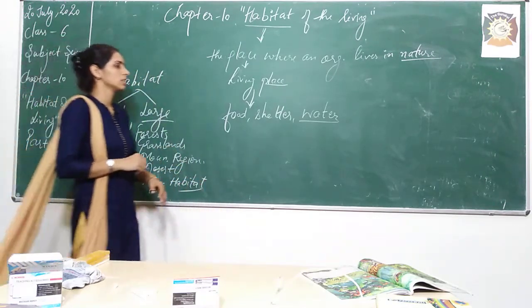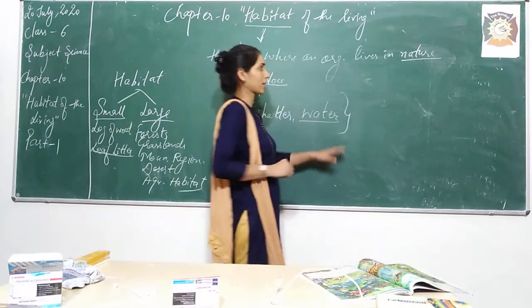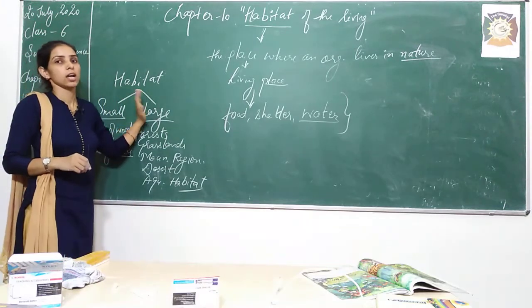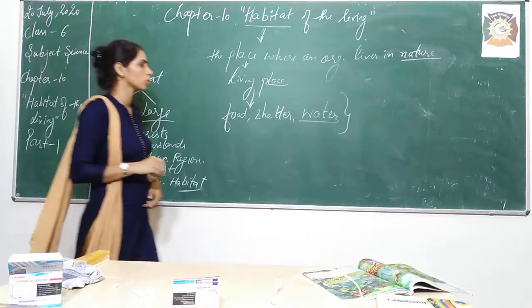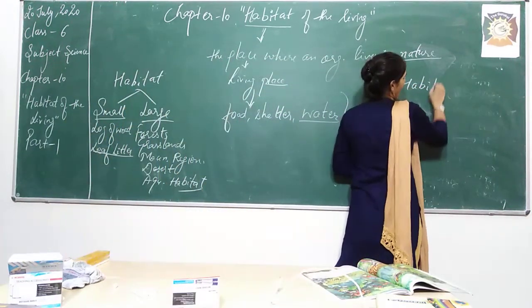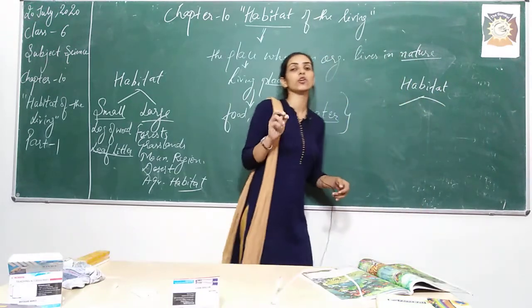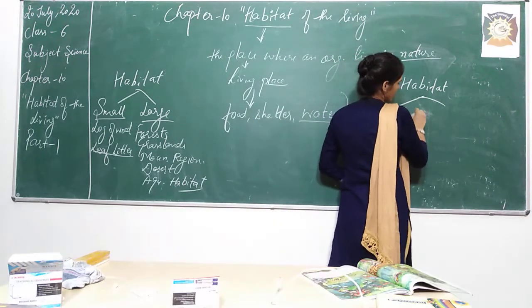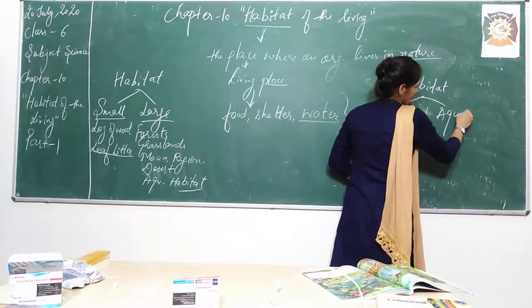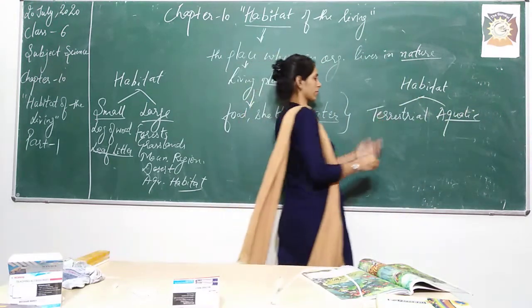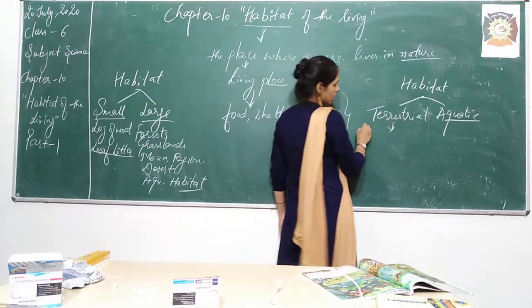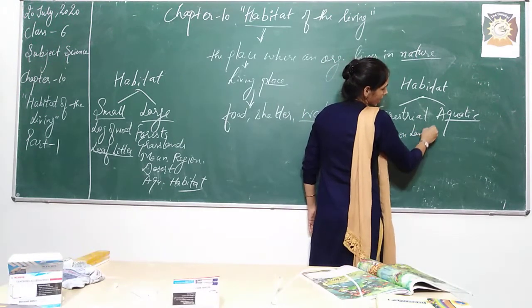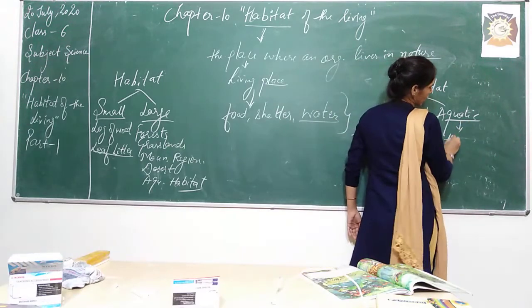So these are the necessities which are provided by the habitat. Now we have discussed about small and large, but the main categories of habitat are of two types. Habitat could be terrestrial as well as aquatic. So we will call it terrestrial and aquatic.